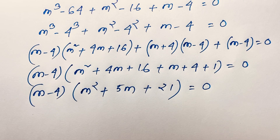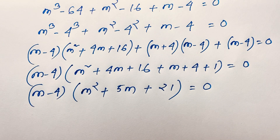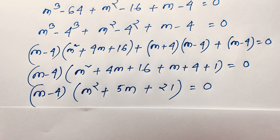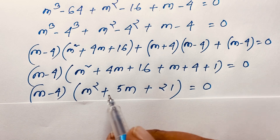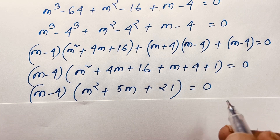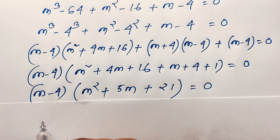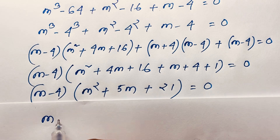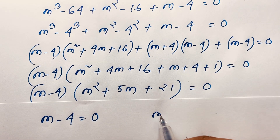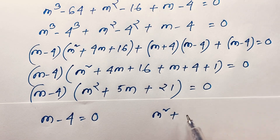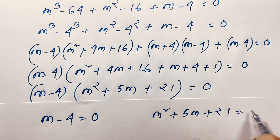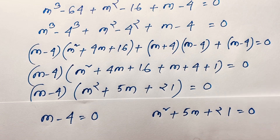This gives two cases: Case 1: m − 4 = 0, and Case 2: m² + 5m + 21 = 0.